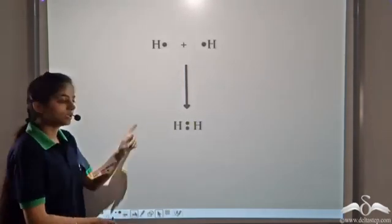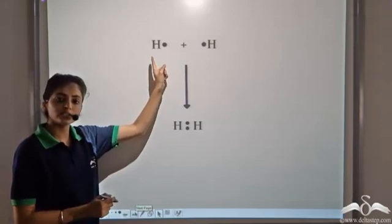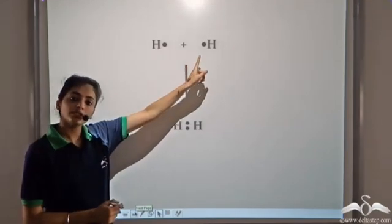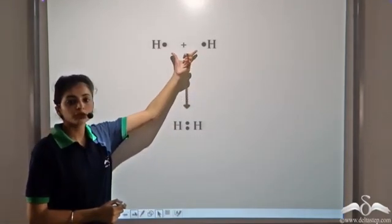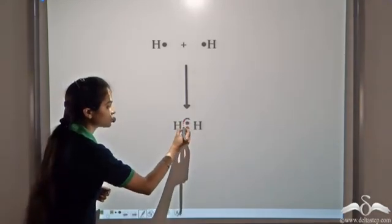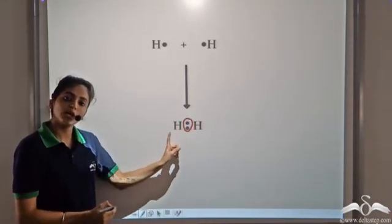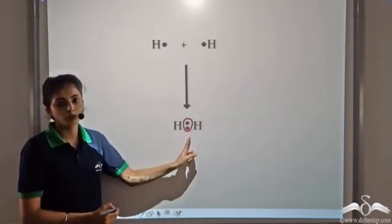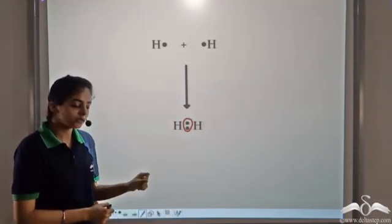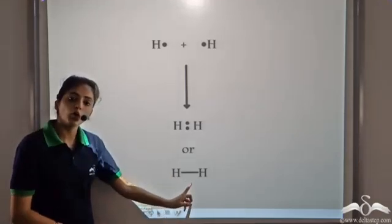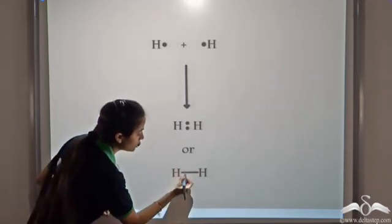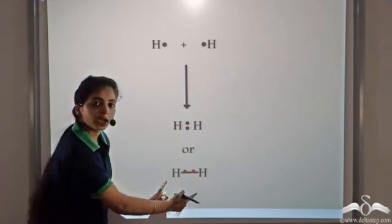This can also be shown in another form, where we only show the valence electrons. Each hydrogen has one valence electron, and both of them share these electrons. So now these two electrons are shared by both the hydrogen atoms, giving both a duplet structure and stable electronic configuration. We can also show a bond between the two hydrogen atoms.